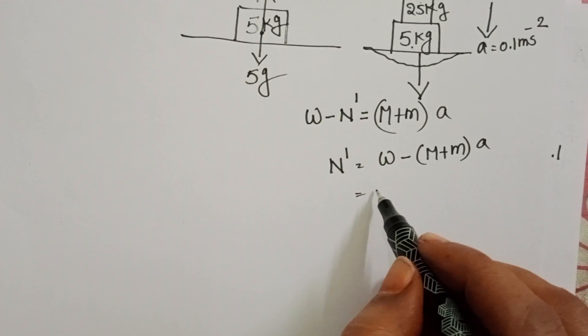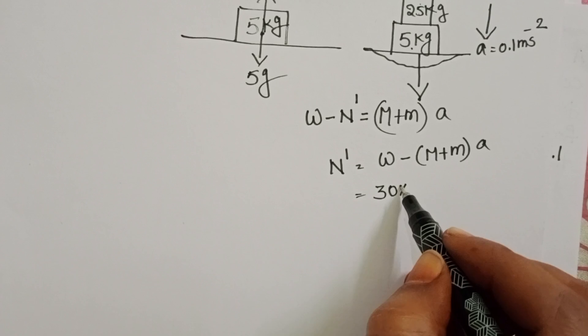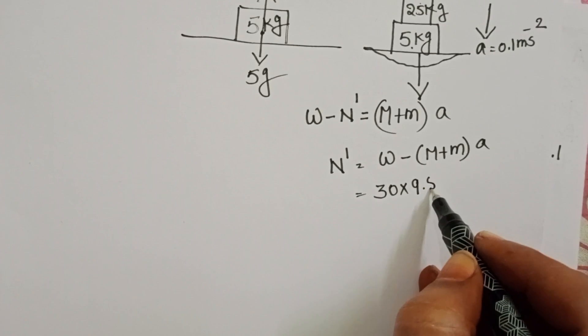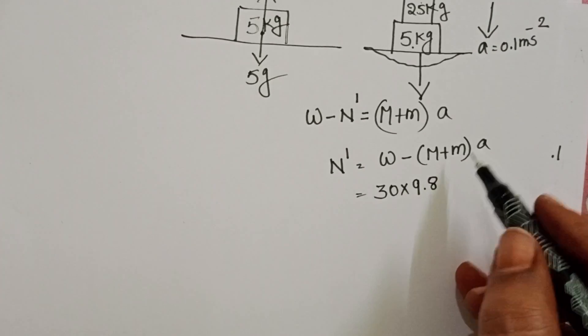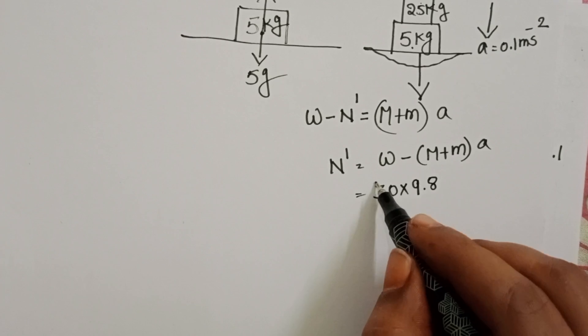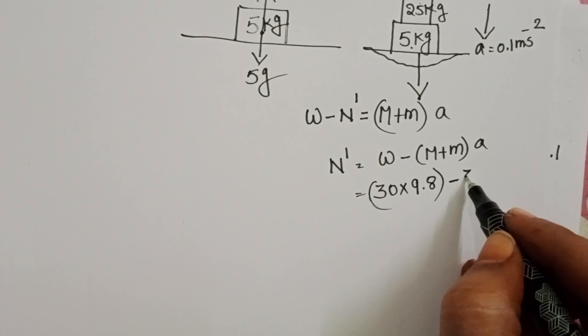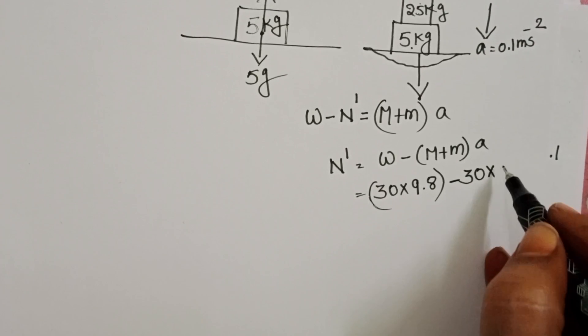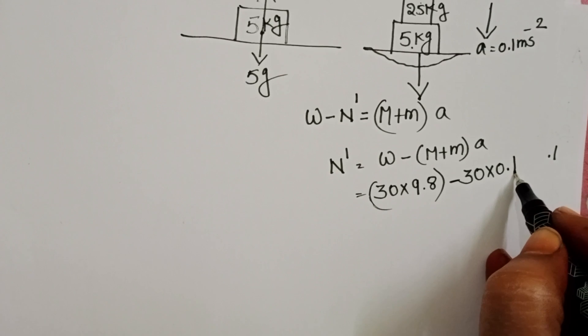Total mass is 30 kg. Take g value as 9.8 because in the question g value is not mentioned. That's why we take 9.8 m per second squared.